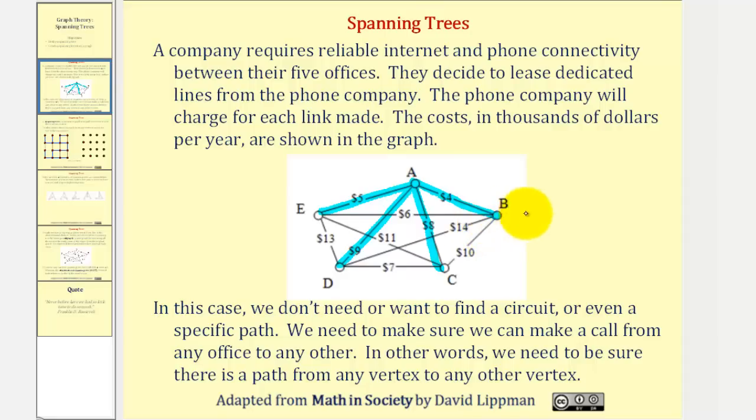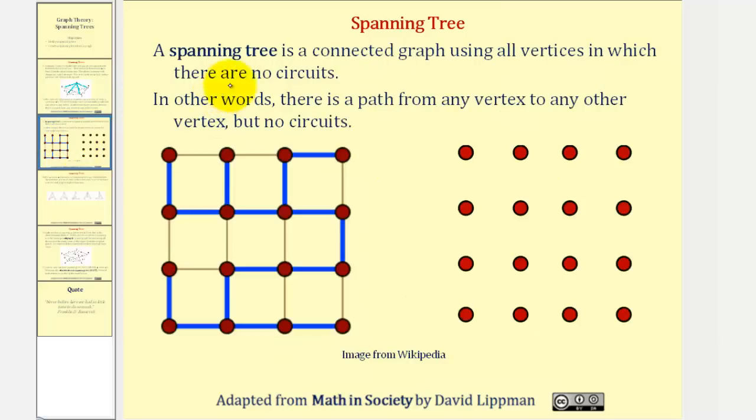Now let's formally define a spanning tree. A spanning tree is a connected graph using all vertices in which there are no circuits. In other words, there is a path from any vertex to any other vertex but no circuits.